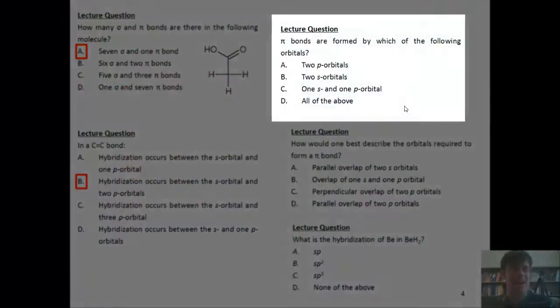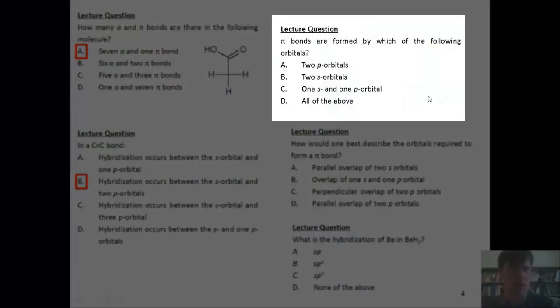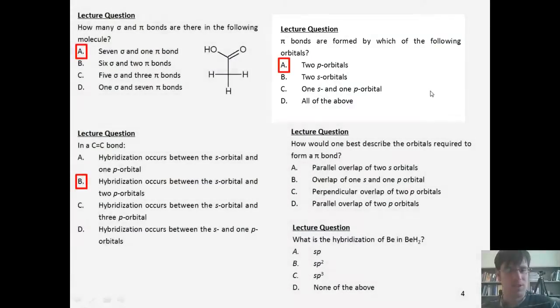In this third question, we're asked, from which orbitals are pi bonds formed? The correct answer is A. If you want to know why, stay tuned.